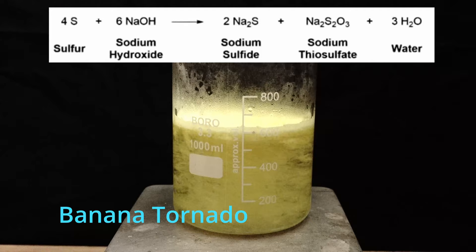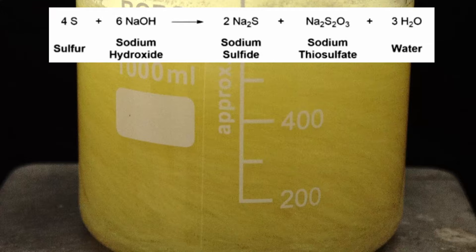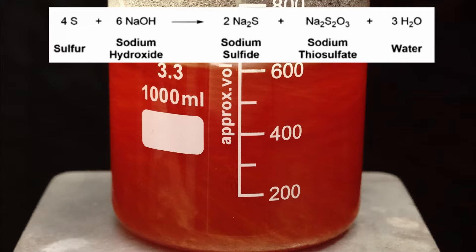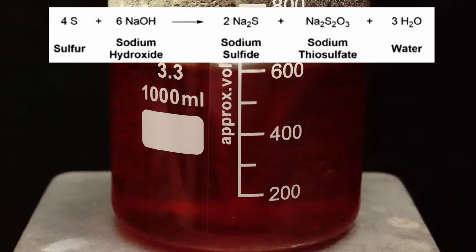You can witness the formation of the sodium sulfide as the sulfur disappears and the solution starts to turn a dark red. Generally, sodium sulfide is colorless, however thiosulfate impurities cause the solution to take on a deeper and darker red color.